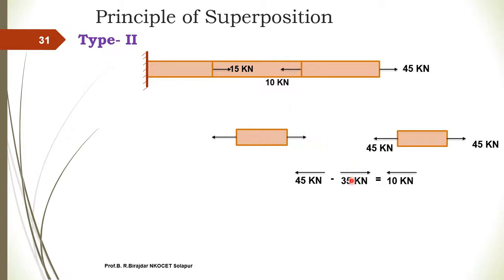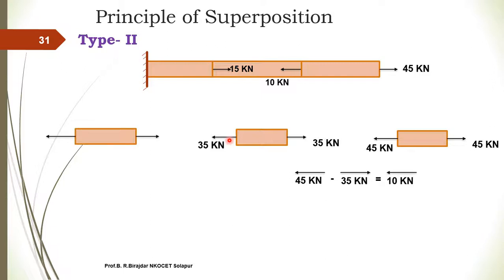We need 10 kN towards the left, so we have to apply 35 kN towards the right. If we apply 35 kN towards the right and 45 kN towards the left, the resultant is 10 kN towards the left. So the 35 kN force acts towards the right on the second body, and for static equilibrium we apply an equal and opposite 35 kN. This is the free body diagram of the second body.